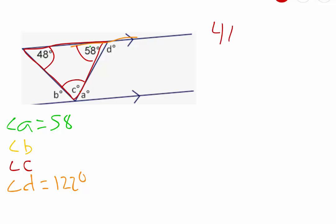So that means that 48 degrees plus that 58 degrees plus angle C must be 180 degrees. So if we take 180 and we subtract 48, and then we subtract 58, if we subtract these two angles here, it should give us what angle C is.